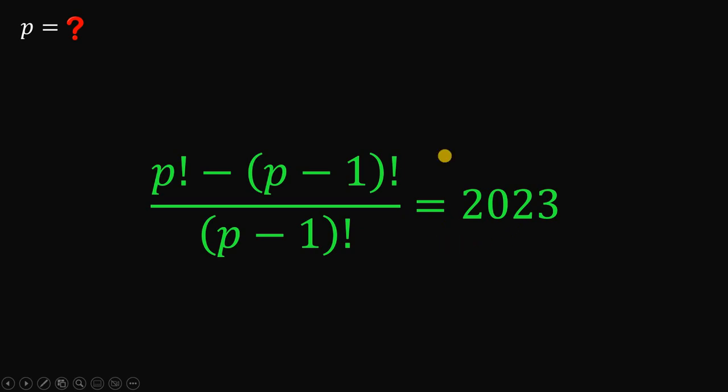Now, to answer this question, we will use this identity. If we have N factorial, it is equivalent to N multiplied by N minus 1 factorial.